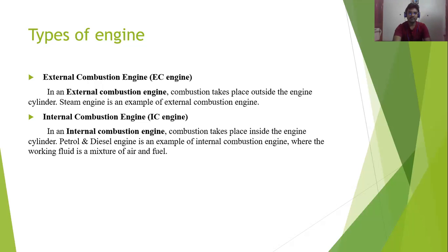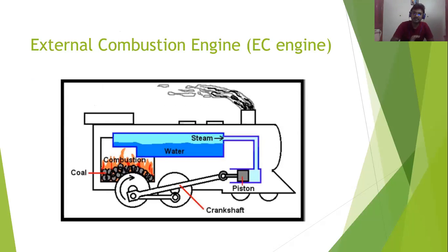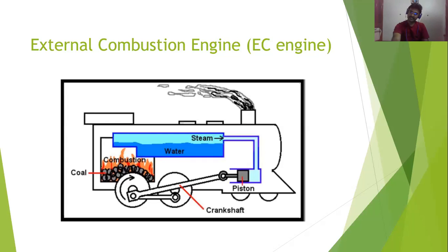In the next slide I will show some images related to EC and IC engines. For the external combustion engine — the steam engine — we burn coal in a separate combustion chamber. Near that chamber we place a water storage tank. Due to the heat from burning fuel, the water heats up and steam is generated. The steam flows through a tube into the piston cylinder, and due to steam pressure the piston moves to and fro, directly connected to the crankshaft. This is the EC engine because combustion takes place outside the cylinder in a separate chamber.